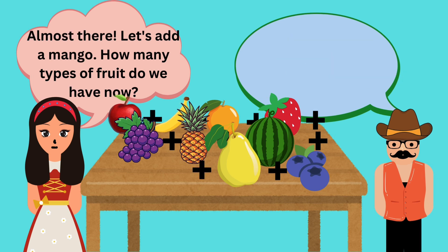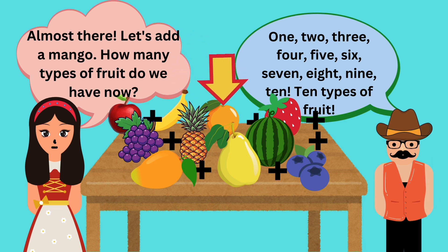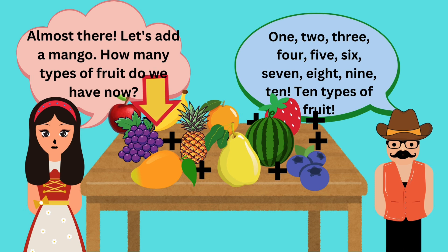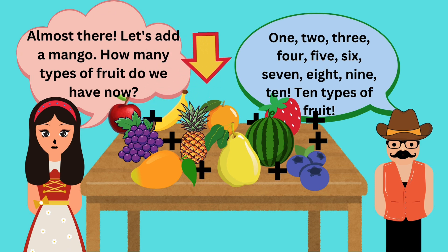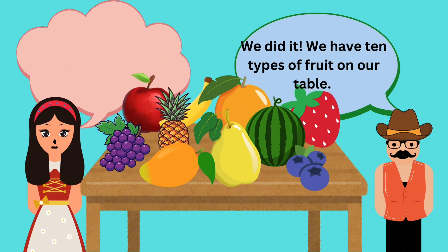Almost there. Let's add a mango. How many types of fruit do we have now? One, two, three, four, five, six, seven, eight, nine, ten. Ten types of fruit. We did it. We have ten types of fruit on our table. Yay!